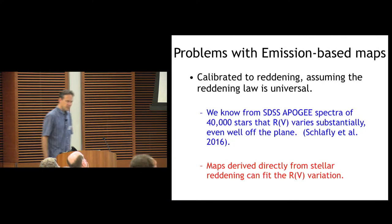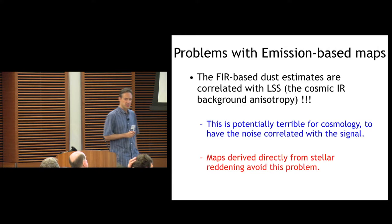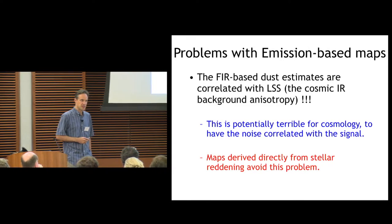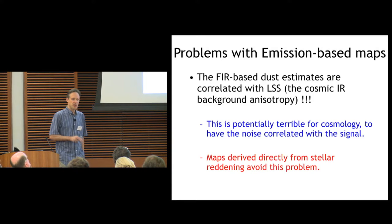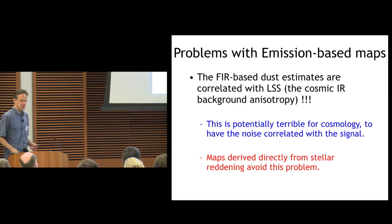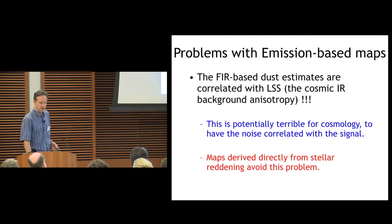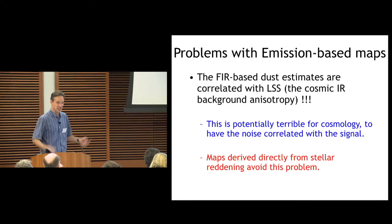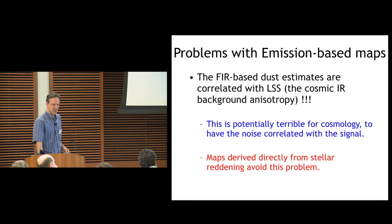And this is an underappreciated problem for cosmology: the emission from the large-scale structure in the universe leaks into infrared-based dust maps. Now we did an estimate of this in the early 2000s for SFD and said this won't be a problem because we're thinking Sloan. But if you go to LSST and the kind of precision that we're going to have in the future for cosmology, this gets to be a real problem that all the galaxies in the universe are in the map except for the ones that were bright enough to remove. Again, if you drive your maps from stellar reddening, this isn't a problem.